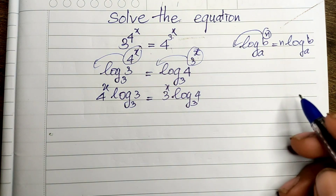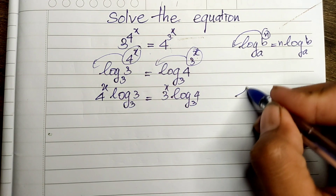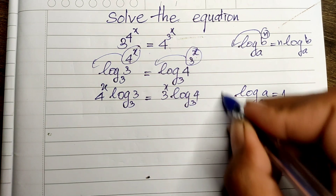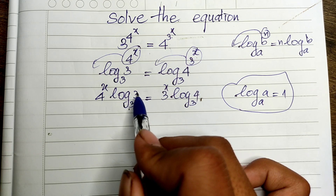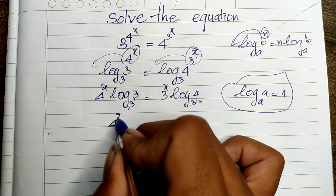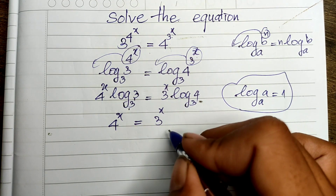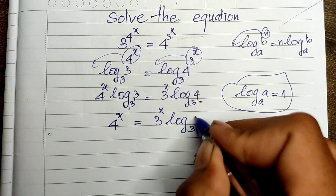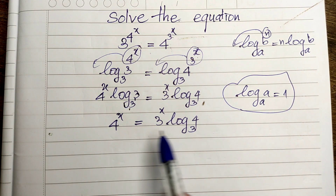Now we simplify. Log base 3 of 3 equals 1, so the left side becomes just 4^8. We now have: 4^8 equals 3^8 times log base 3 of 4.